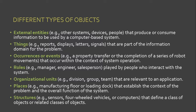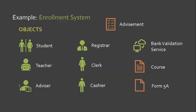In the problem space, we cannot guarantee that all of these objects can be found. We need to filter those objects that are relevant to our system or the solution. Going back to our enrollment system example, the actors by default become objects in our model — the student, teacher, advisor, registrar, clerk, cashier, and the bank validation service. We also add other objects that participate in the system, like advertisement, the course, and Form 5A.